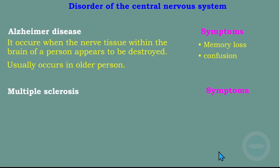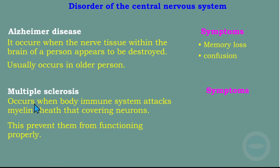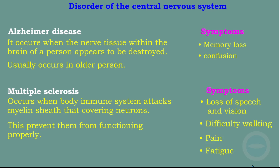Multiple sclerosis occurs when the body's immune system attacks the myelin sheath, the covering of the neuron. If the immune system attacks the myelin sheath, the neuron cannot function properly. Symptoms of someone with multiple sclerosis include loss of speech, loss of vision, difficulty walking, pain, and fatigue.